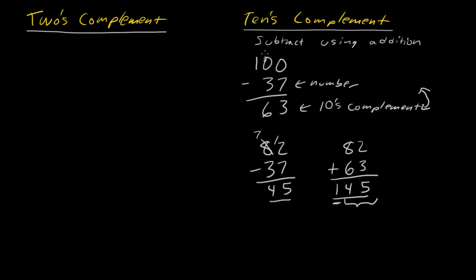That's a little trick you can do. If you don't know how to subtract but you know how to add, you can subtract using addition. You don't have to actually do subtraction here. In principle, you can take the 10's complement just by looking at each digit — except for the last one.